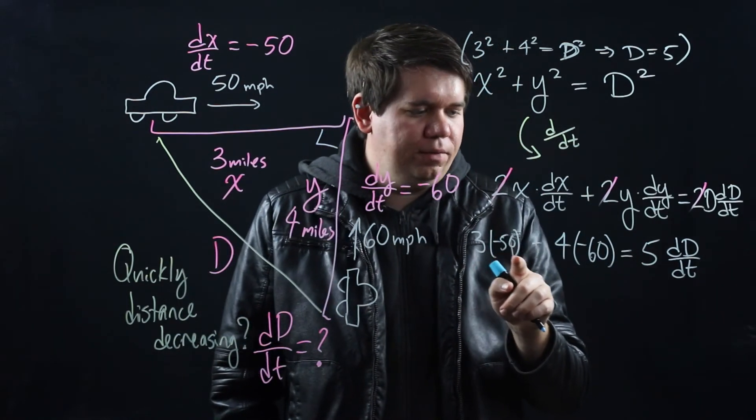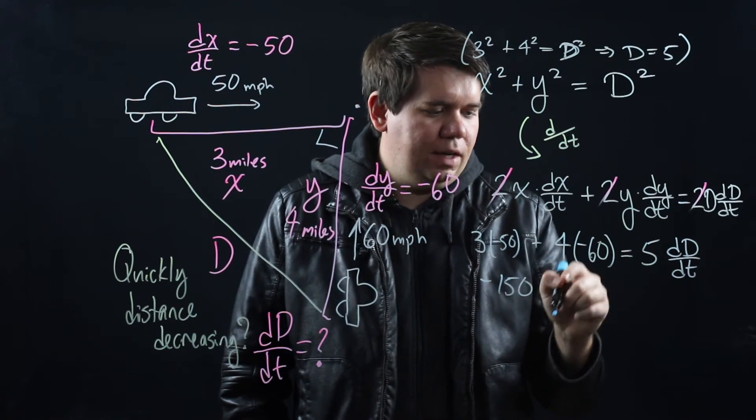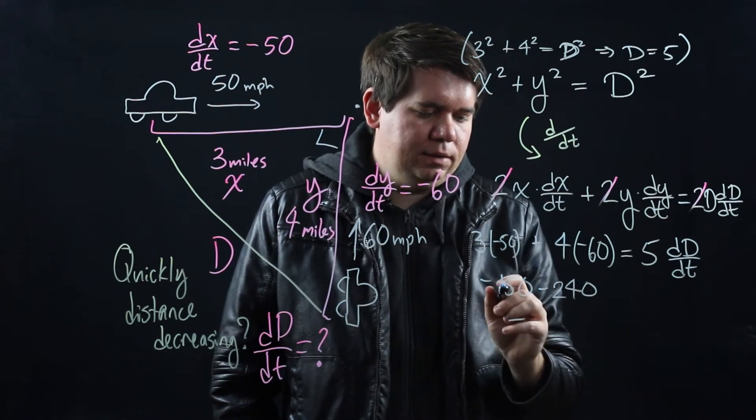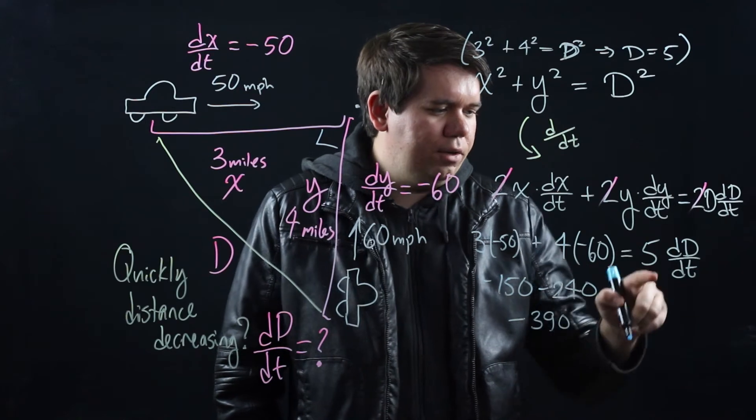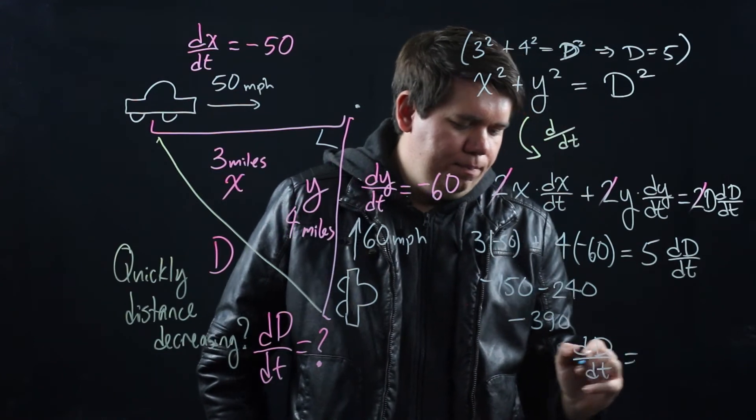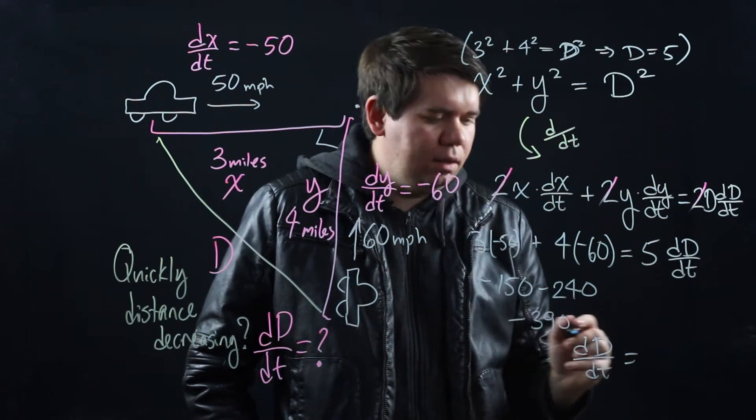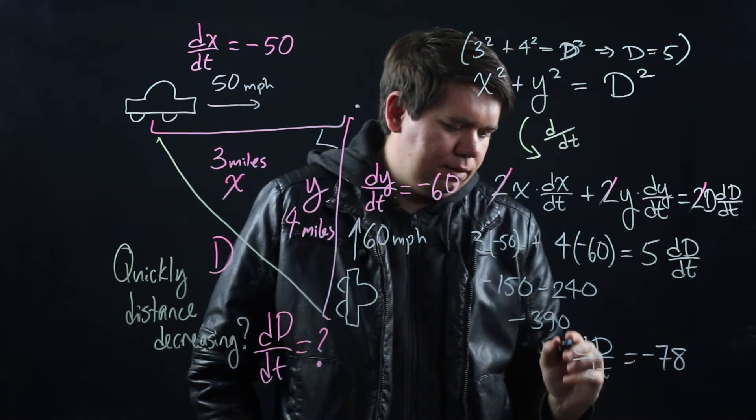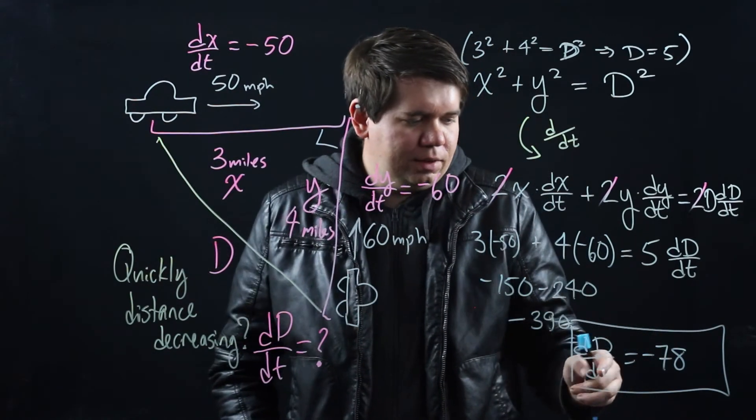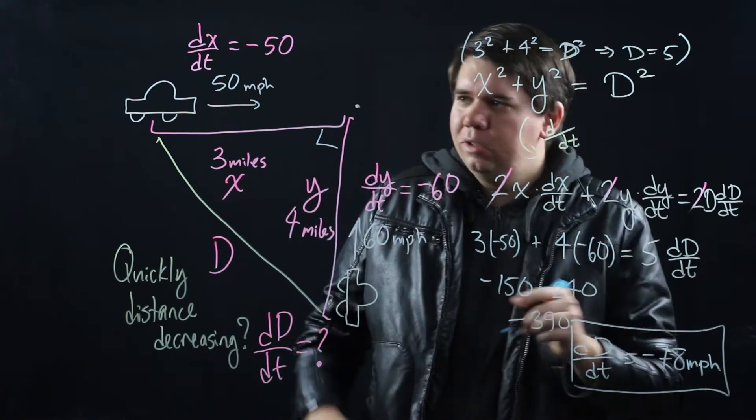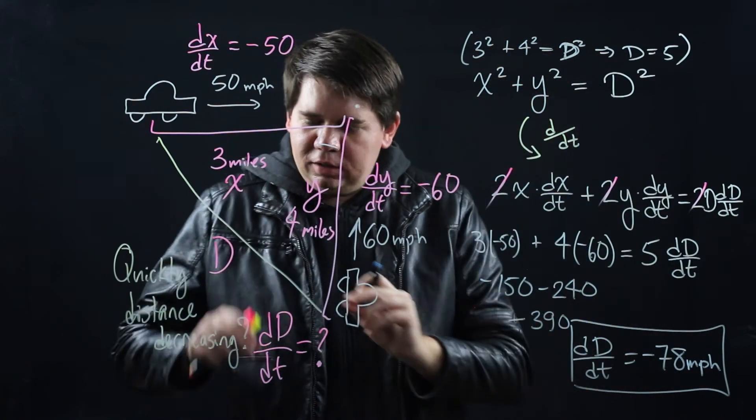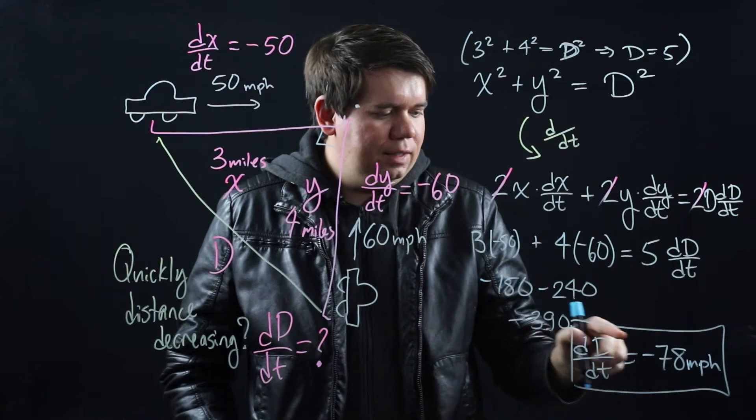3 times 50 is minus 150. 4 times 60, now we have minus 240 so that gives you minus 390. We're now going to divide by that 5 and we end up with the change in d over time is minus 390 over 5 which should be what, 78, minus 78. If you want to put some units on this your distance is in miles so the changes over time would be miles per hour just like it was for your dx/dt and your dy/dt.